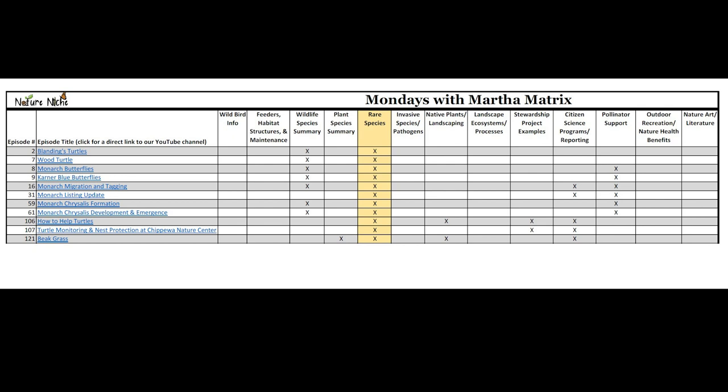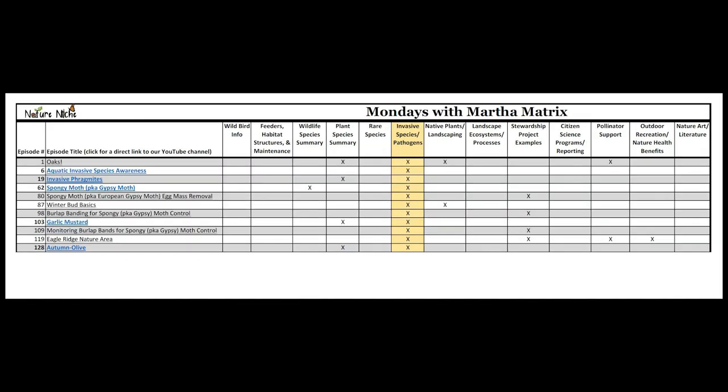The fifth category is one near and dear to my heart: rare species. This could be flora or fauna — things that are either listed at the state or federal level or being considered for that. Examples include Blanding's turtles, wood turtles, monarch butterflies, Karner blue butterfly, and even rare plants like beak grass.